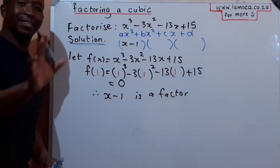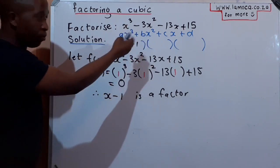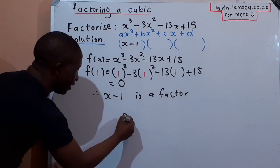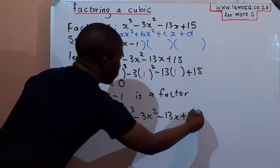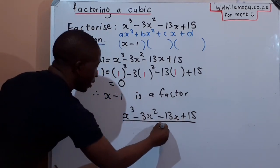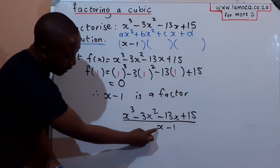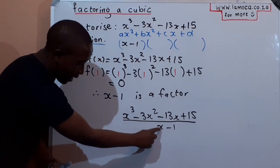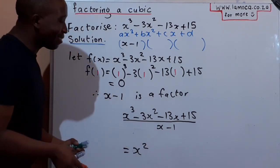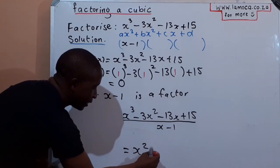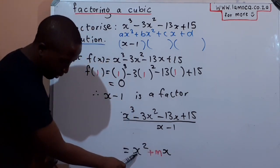Now I'm going to apply the concept of 'monkeys eat apples plus bananas'. What you do is divide (x - 1) into x³ - 3x² - 13x + 15. When dividing, you take the first term divided by the first term: x³ ÷ x = x². For the middle term, we don't know what it is yet — that's the 'monkey term', which I'll call mx. So the first term divided by first term gives x², and the middle term is mx, which we don't know yet.